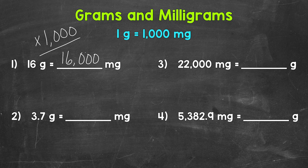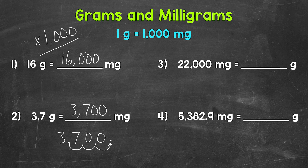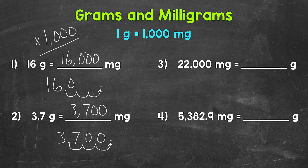So again, move the decimal three times to the right when we multiply by one thousand. Let me rewrite three and seven tenths here, and let's move that decimal once, twice, and three times to the right. We can fill these gaps with zeros, and that's our answer: 3,700. So 3.7 grams equals 3,700 milligrams. Let's try that same technique for number one — moving the decimal three times to the right — and see if we still get 16,000. With 16, the decimal goes at the end of any whole number. Move it once, twice, and three times to the right, fill with zeros, and we get 16,000 as well.